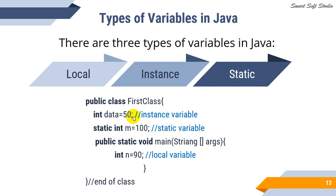The data is an instance variable. This is the root level that we have to declare. This is the static method that we have to use, and the static variables are used to access the local variables. The local variables are also used to access other local variables. The other thing is that the Java variables are used in code.